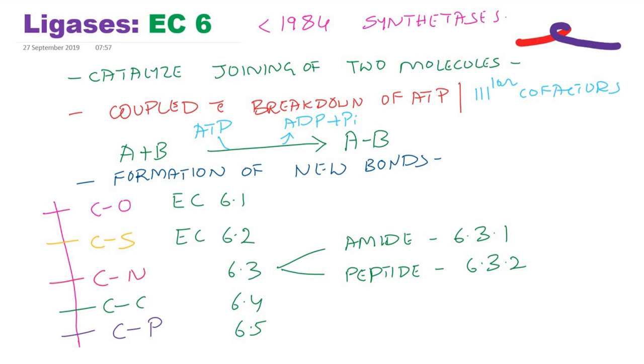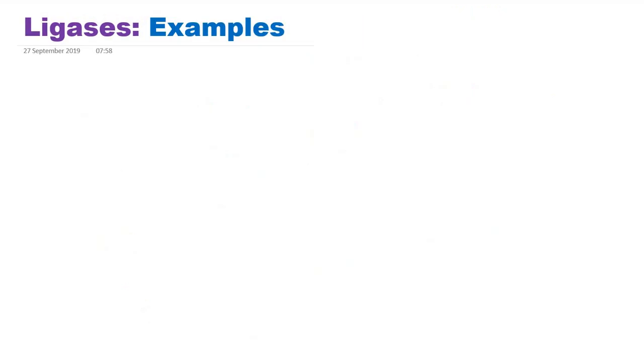We will see specific examples. A very good example is glutamate synthetase. Don't confuse it with glutamate synthase - synthase and synthetase are different. This particular enzyme catalyzes conversion of glutamic acid or glutamate. Remember there will always be two molecules in the enzyme-catalyzed reaction by ligases. The second molecule will be ammonia.